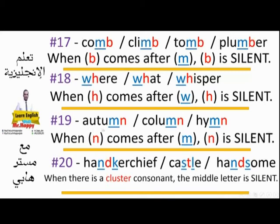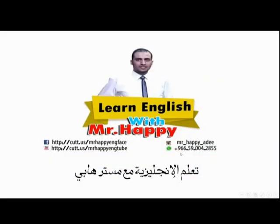Rule nineteen: autumn — don't say 'autumn'; column — don't say 'column'; hymn — don't say 'hymn', say 'him'. Without the N. Why? Because when N comes after M, the N is silent. Rule twenty — the last rule — is about the cluster consonant. When we have three consecutive consonants, we drop the middle one. Like: handkerchief, castle — don't say 'castle', say 'castle'; handsome — don't say 'handsome'. We've come to an end. Thank you very much for listening to me. I'll be happy to see you again very soon, inshallah. Goodbye.